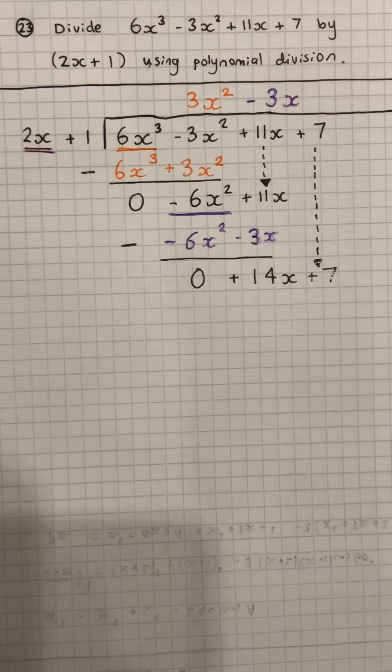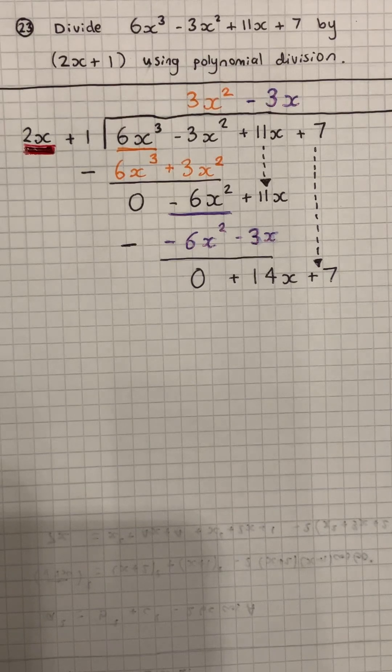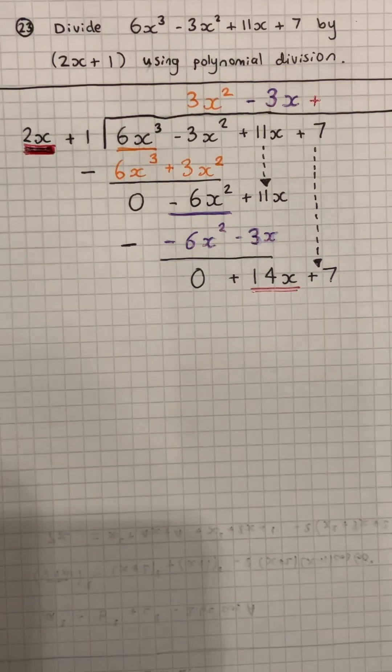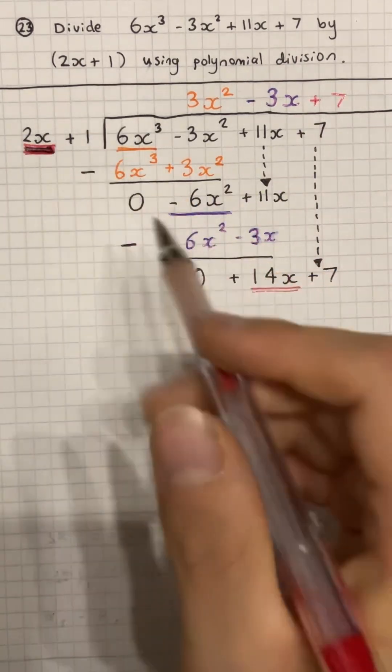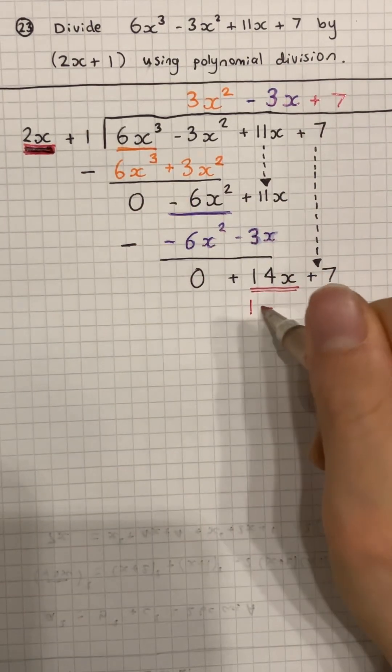Next, bring down the 7 to start all over again. What do you times by 2x to get to 14x? The answer is 7, we put that to the top. We take the answer and then multiply it by the 2x plus 1.